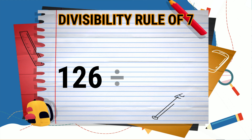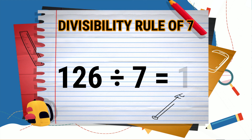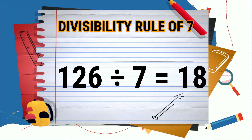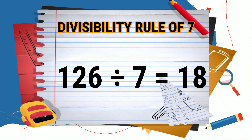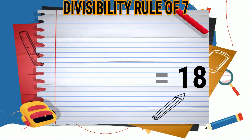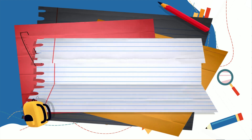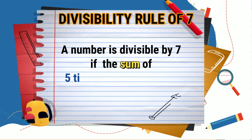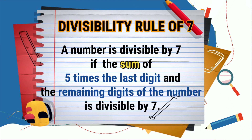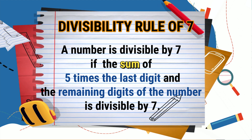Now let's divide: 126 divided by 7 is equal to 18. The quotient has no remainder, therefore 126 is divisible by 7. We can use either way to find if the number is divisible by 7.